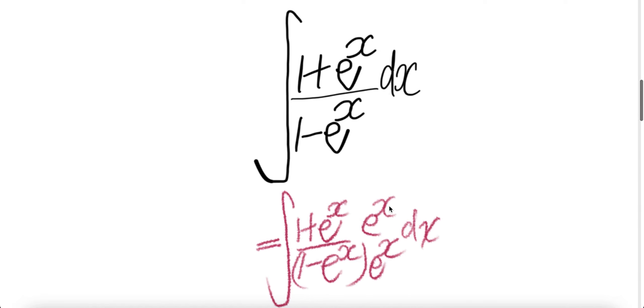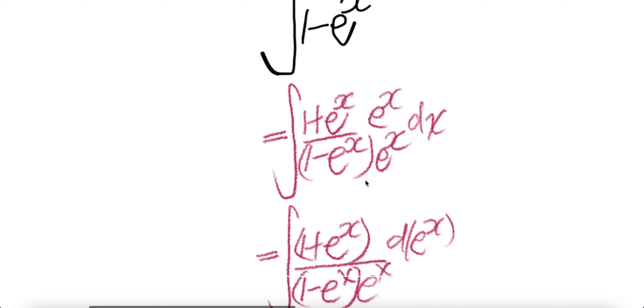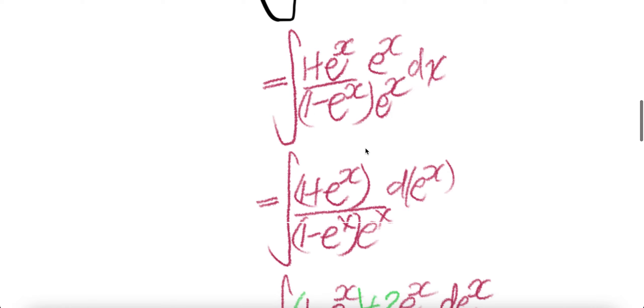Now we are going to multiply top and bottom with e to the power x. And then we are going to push e to the power x into dx. Derivative of e to the power x is e to the power x dx. So this piece downstairs is the same.